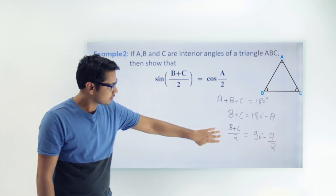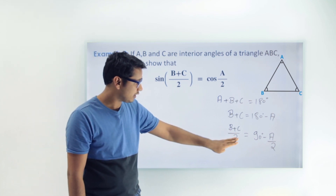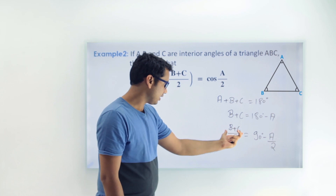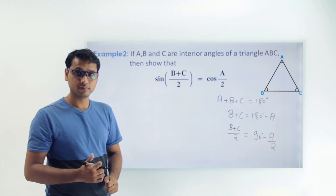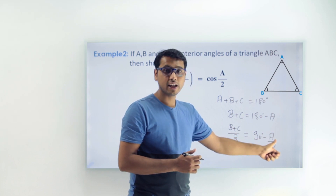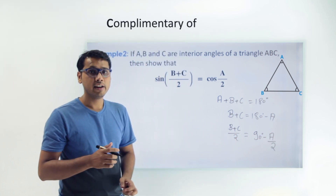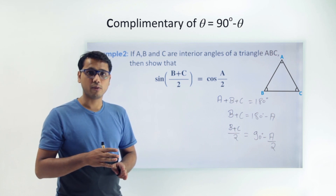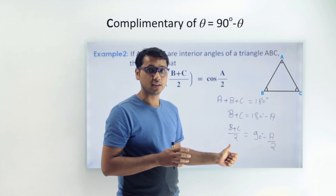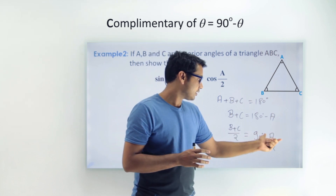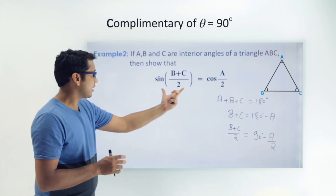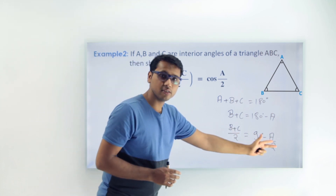Now if you look at this equation: (B + C)/2 = 90° − A/2. We can say that (B + C)/2 and A/2 are complementary angles, because if we subtract any angle from 90 degrees, that angle is the complementary of the previous angle. So (B + C)/2 is the complementary angle of A/2. We can replace sin((B + C)/2) using 90° − A/2.